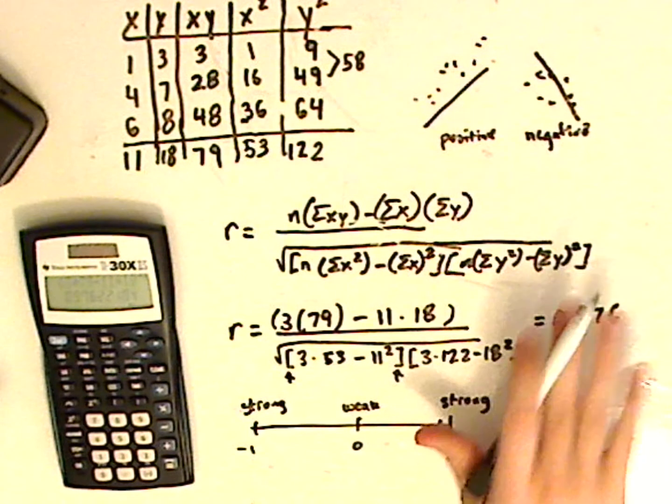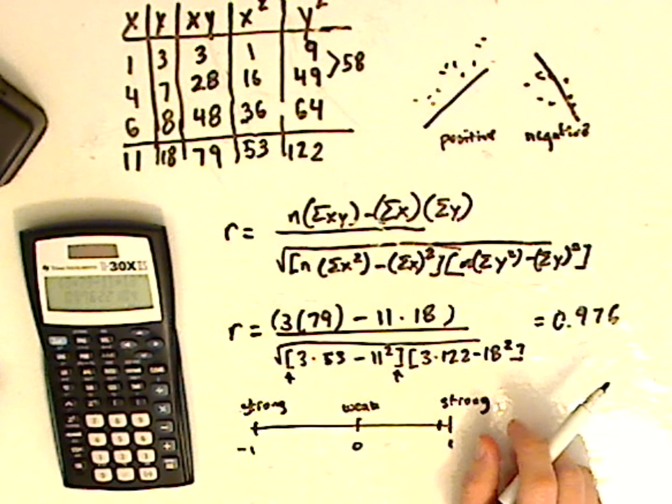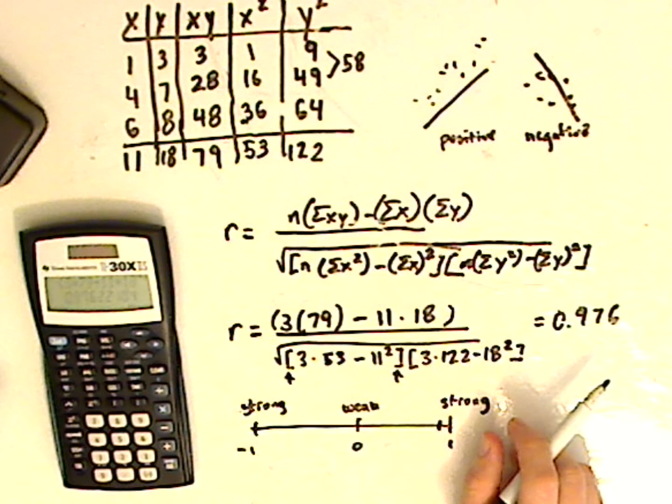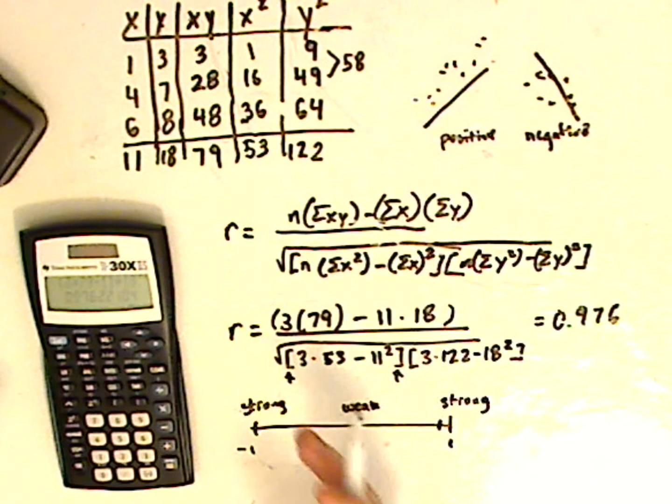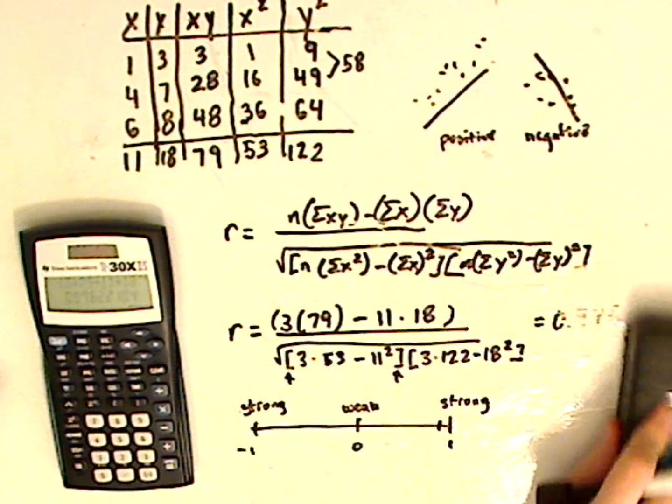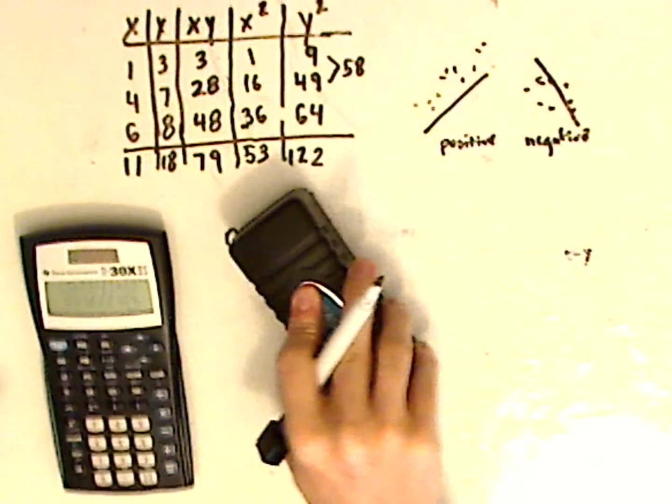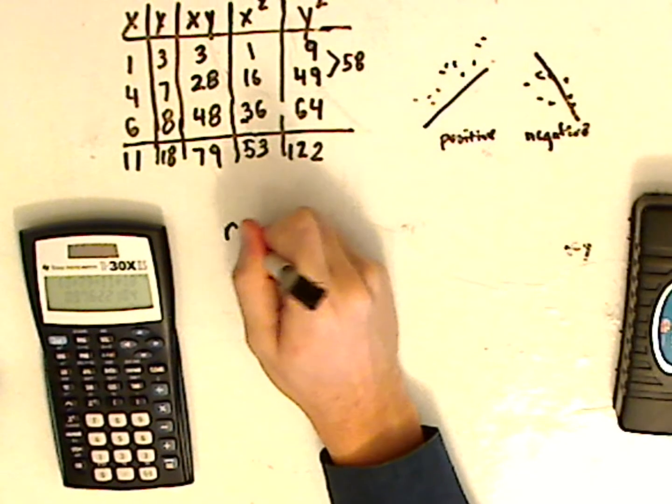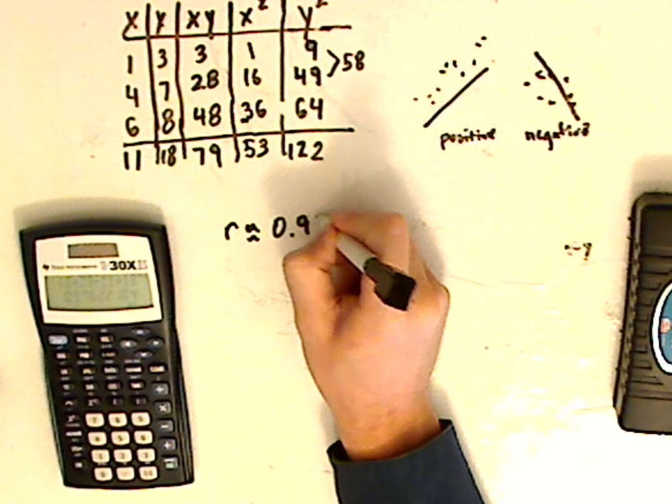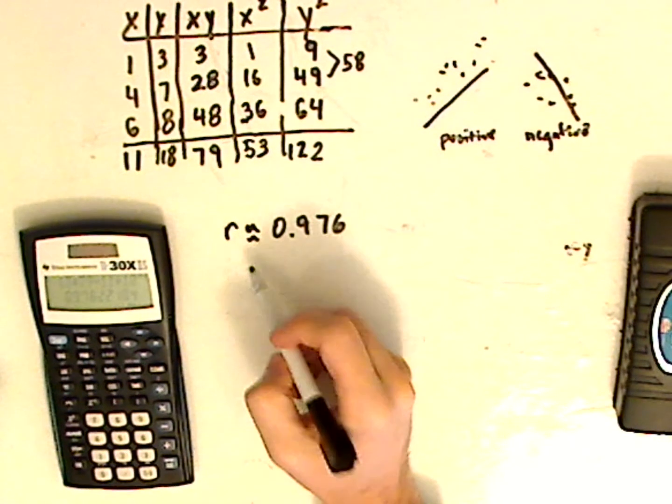Now I'm going to erase all of this. So you might need to pause the video, write some of this stuff down. Now, given that you have the correlation coefficient, it's very easy to find the coefficient of determination. So I found my r to be approximately 0.976.